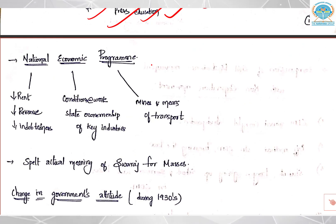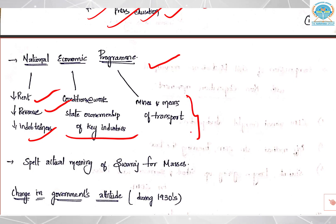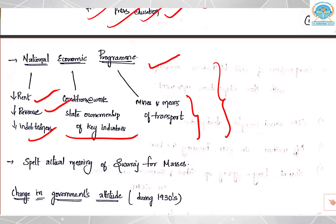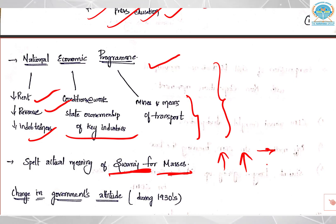The second resolution is about the national economic program. From an economic angle, they talked about reduction of payment of rent, reduction of revenue, relief from indebtedness, better conditions of work, rights to workers and peasants, state ownership of key industries, state ownership of mines, and means of transport. By talking about all these for the first time, it spelt out the actual meaning of Swaraj for the masses — asking for ownership, reduction of rent and revenue, and administrative and political power.